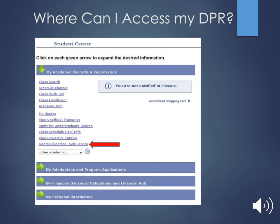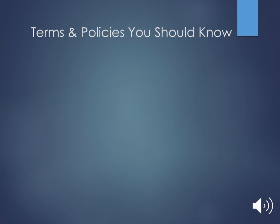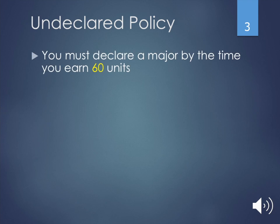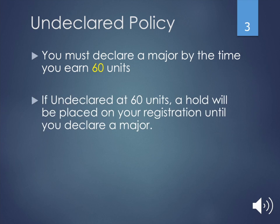Going over some terms and policies you need to know as a student on this campus — undeclared policy. Undeclared students: we understand you come into school and even in your second year you still may not know what you want to do. But as you get closer to your third year, it's time to start identifying some majors you want to go into, because if you don't, the university will put a hold on your account. The university gives you up to 60 units. We're getting closer to completing those 60 units, and if you do not have a major at 60 units, the university will place a hold and you must declare a major to get the hold removed. You won't be able to register without a declared major after 60 units.